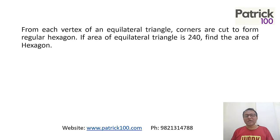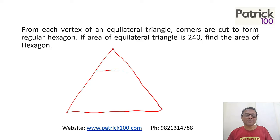The first question: from each vertex of an equilateral triangle, corners are cut to form a regular hexagon. Normally, if it's a geometry question about area, one way to solve it is to try to break it up into equal parts if possible.